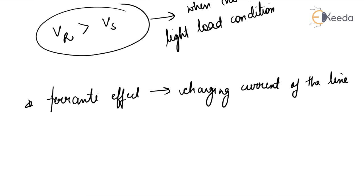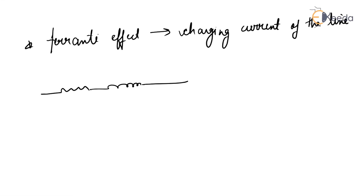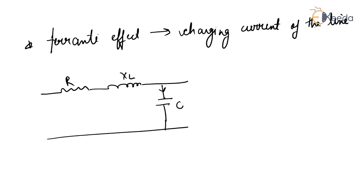In a transmission line, there is series resistance, reactance, and also capacitance. This capacitance is found between the conductors and between the conductor and the earth. The current passing through this capacitance is known as the charging current. When an alternating voltage is applied, the current that flows into the capacitor is known as the charging current, also called the capacitive current.